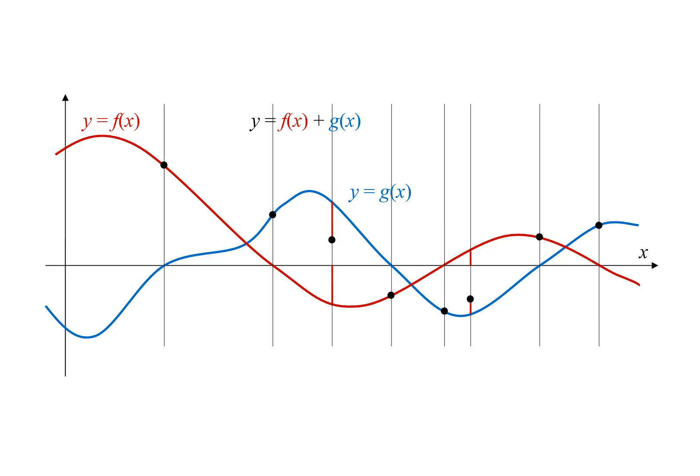We can do this the other way around. At this value of x, the height of g of x is represented by this vertical blue line segment. We want to add this to f of x, so we start at f of x and go up by this amount. That gets us to the value of the sum, f of x plus g of x — another point on our graph.